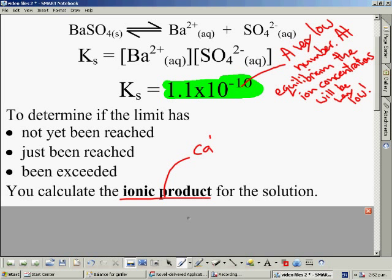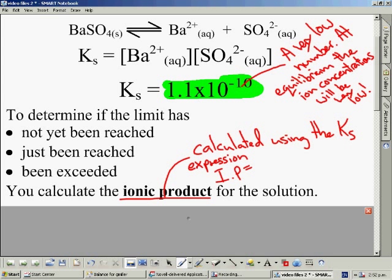An ionic product is just very straightforward to calculate. What we do is that we use the KS expression and we just substitute in the concentrations of ions that we have in that particular solution. In this case, the ionic product will be the barium ion concentration multiplied by the sulfate ion concentration, because that's what the KS expression says.